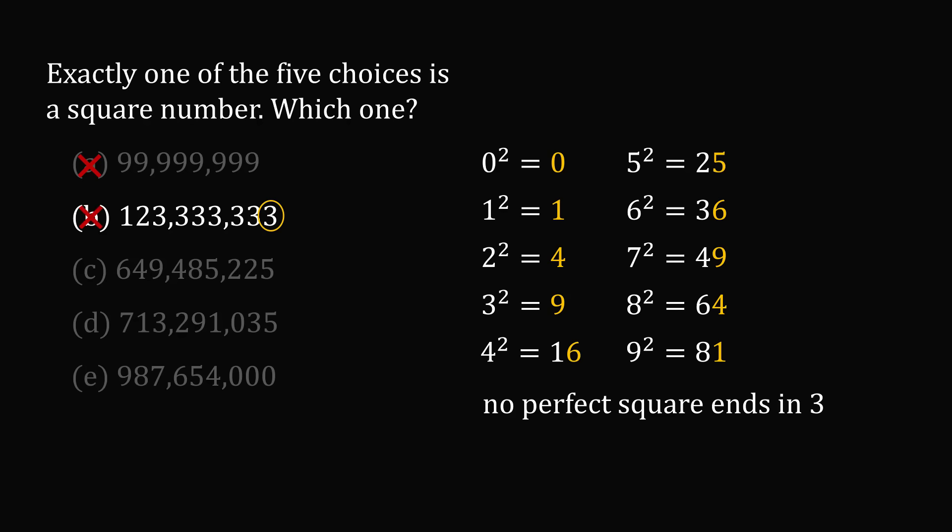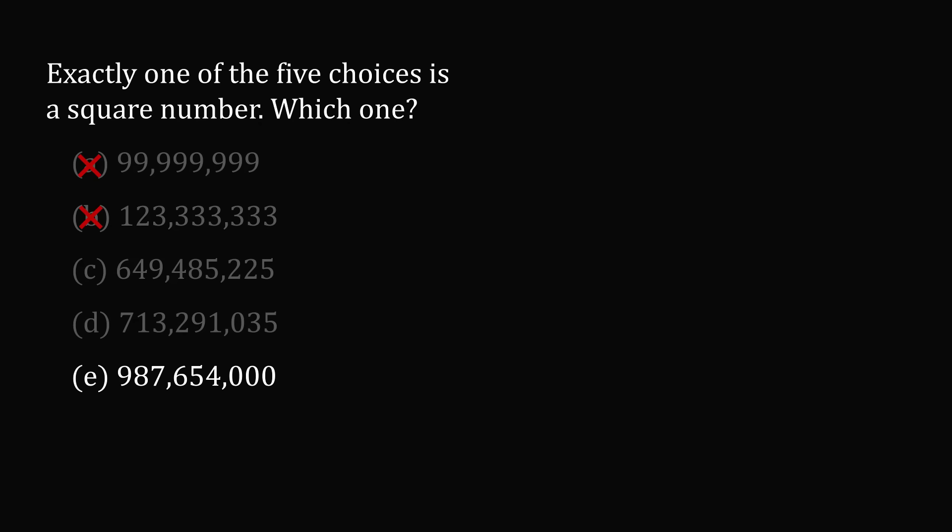Let's now go to the very last option choice, which is option E. Notice this number ends in three zeros. This means option E can be written as 987654 multiplied by 1000.